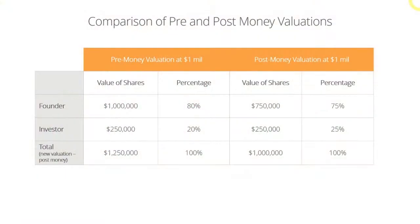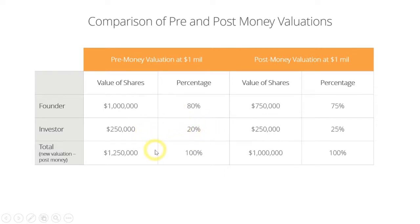Looking back at this table again, if you mention to your investor initially that your company's valuation is $1 million pre-money, you will get this scenario where your founder will own 80%, the investor will own 20%, and your new post-money valuation will be $1.25 million.